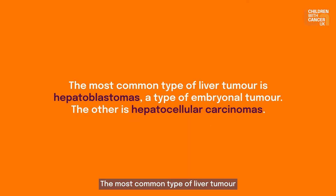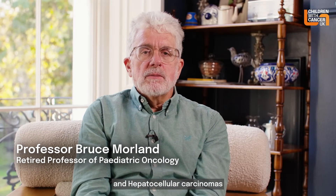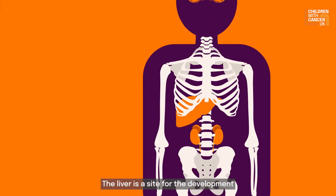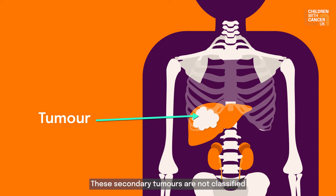The most common type of liver tumour is hepatoblastoma, a type of embryonal tumour. The other is hepatocellular carcinoma. Hepatoblastoma and hepatocellular carcinomas are primary tumours. The liver is also a site for the development of secondary tumours that spread from other parts of the body. These secondary tumours are not classified as hepatic tumours.